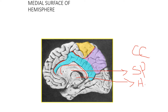Just above the corpus callosum, we have a sulcus — above the corpus callosum — this is called the callosal sulcus. That is the first sulcus on this medial surface.